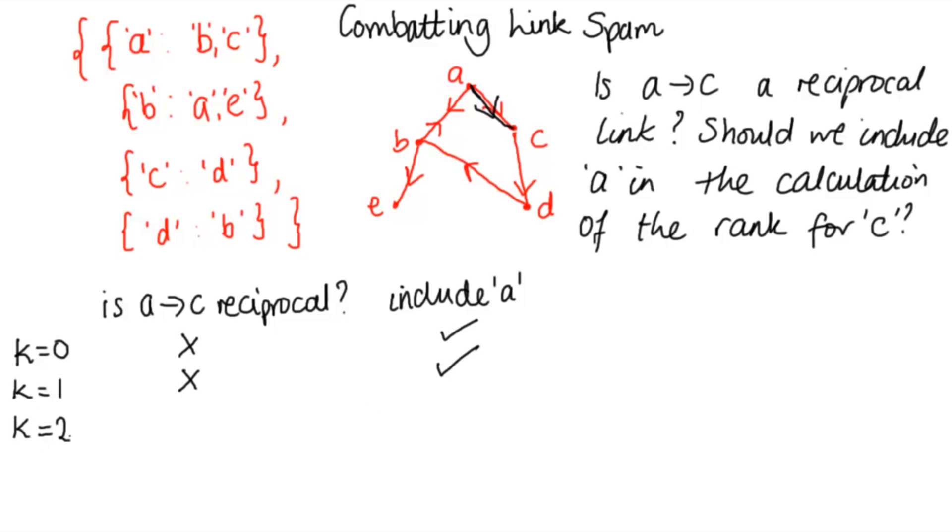If K equals two, we need to see if there's a path of length two from C to A. So if we start at C, then we can only get to D. That's used one of the two links we're allowed to click on to get back to A. So what we want to know now is can we click on one link from D to get back to A? And the answer is no, we can't, which means that AC is not reciprocal. We should include A.